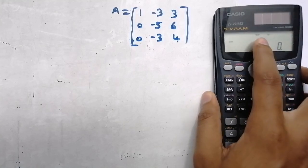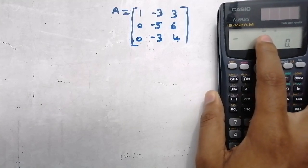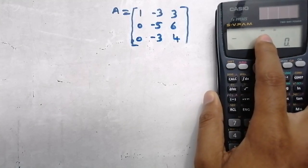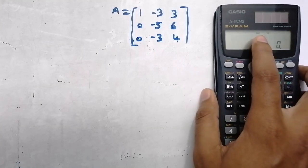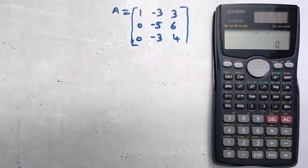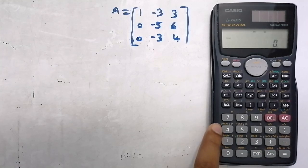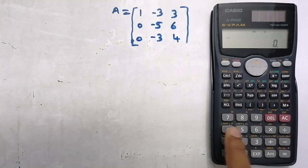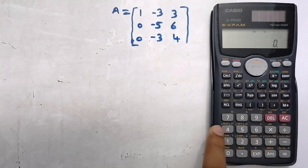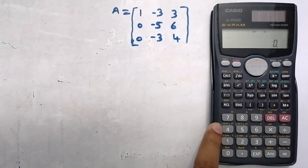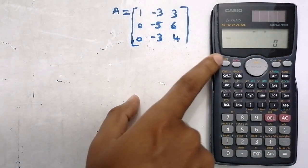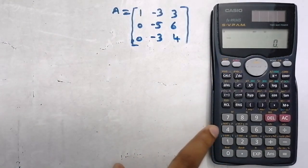After pressing 2, you can see a small icon like 'Mat' on the screen — that means Matrix. Also on the calculator, above number 4, you can see 'Mat' written in yellow color. Above every digit there is something written in yellow. So above number 4 it says 'Mat', meaning Matrix.